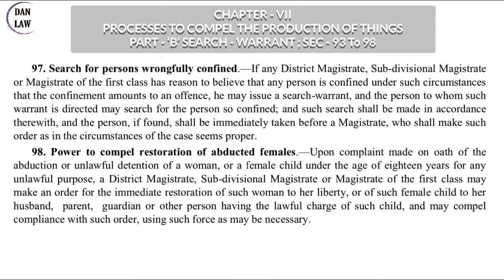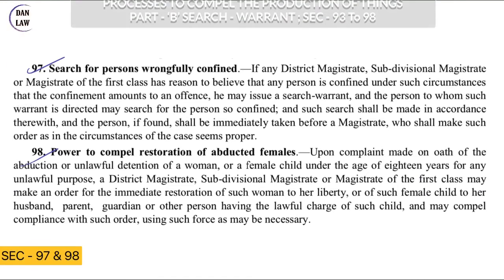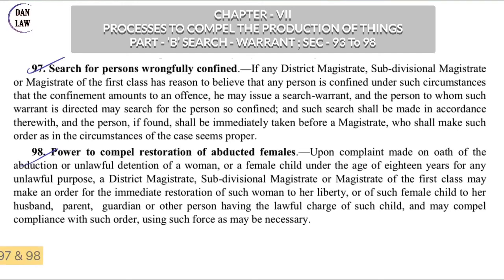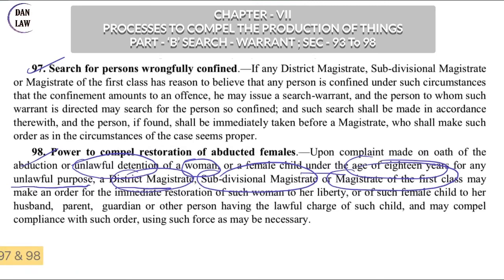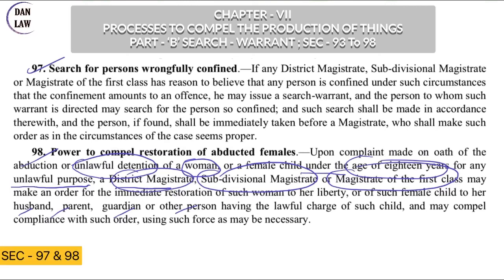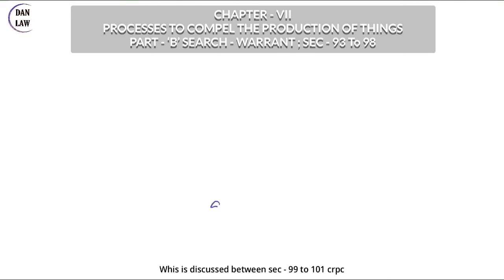Section 97 — search for a person wrongfully confined: if someone is wrongfully confined, you can search for that person. Section 98 — power to compel restoration of abducted females: upon complaint made on oath of the abduction or unlawful detention of a woman or female child under the age of 18 years, for any unlawful purpose, the District Magistrate, SDM, or Magistrate of First Class may make an order for the immediate restoration of such woman to her liberty, or of such female child to her husband, parent, guardian, or other person having the lawful charge of such child, and may compel compliance with such order using such force as may be necessary.